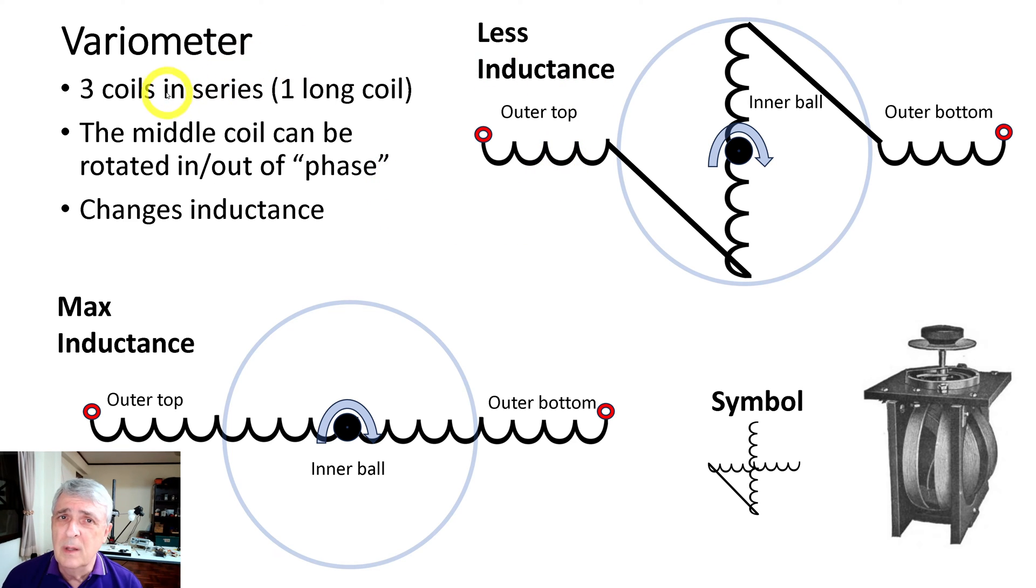Okay, first of all, let's do a summary of the variometer. It is basically three coils in series. It is one long coil, like down here. It's the outer part of the ball coil and the inner coil.